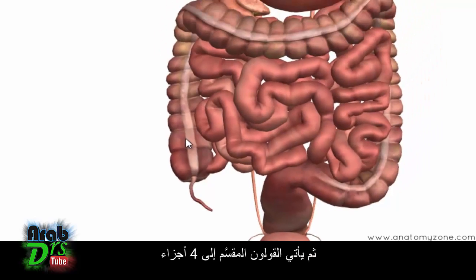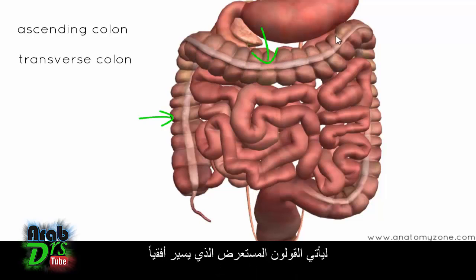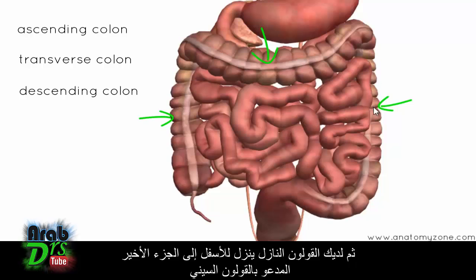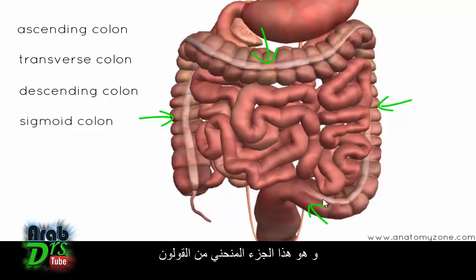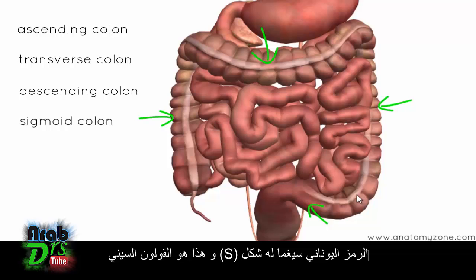The colon is separated into four parts. You have the ascending colon on the right, which ascends. Then the transverse colon, which runs horizontally. Then the descending colon, which descends down into the last part called the sigmoid colon. The sigmoid colon gets its name because it's S-shaped — the Greek symbol sigma is the letter S.